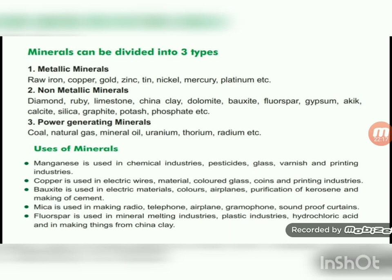Minerals can be divided into three types. First, metallic minerals — iron, copper, gold, zinc, tin, nickel, mercury, platinum, etc. Second, non-metallic minerals — diamond, ruby, limestone, china clay, dolomite, bauxite, phosphor, gypsum, calcite, silica, graphite, potassium, phosphate, etc. Third, power-generating minerals — coal, natural gas, mineral oil, uranium, thorium, radium, etc.